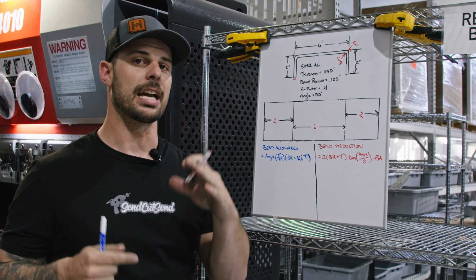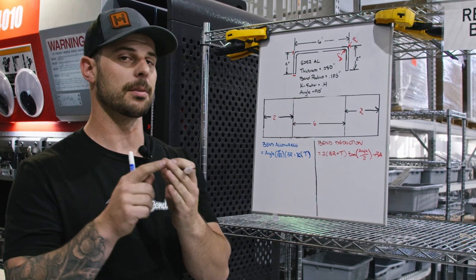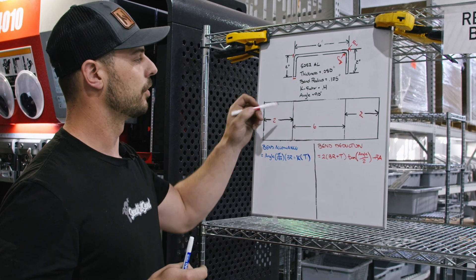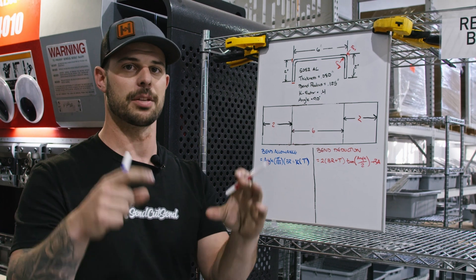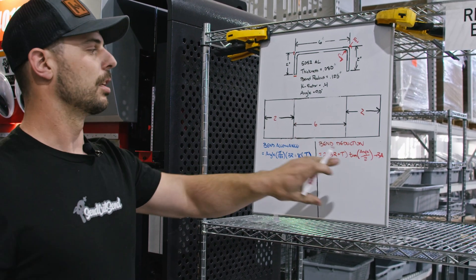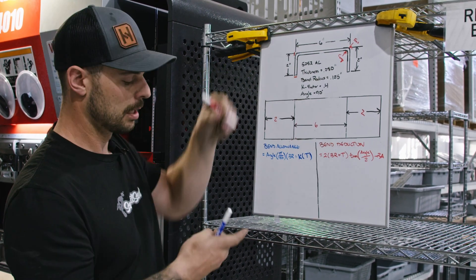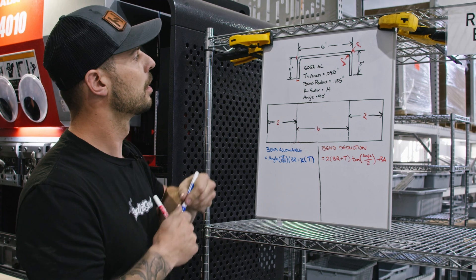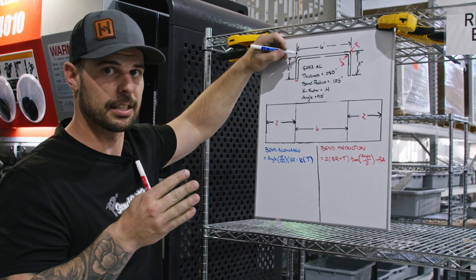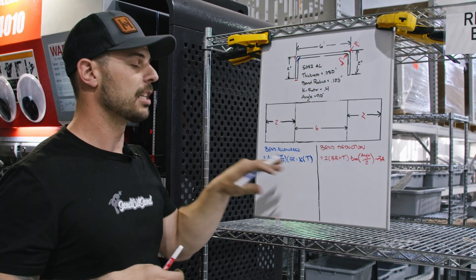So what we can do is use a calculation called the bend deduction. This is the amount we need to subtract from our dimensions in order to get the correct bend points and have a flange that measures correctly. But before we can do the bend deduction, we have to calculate the bend allowance, which is the actual measurement of the neutral axis — the stretch neutral axis in the bend — that we talked about in the last video.